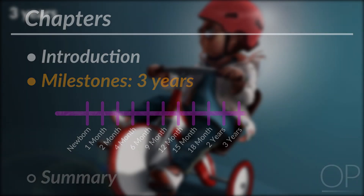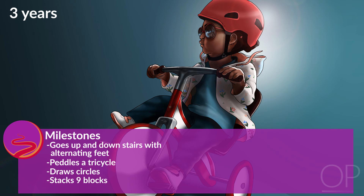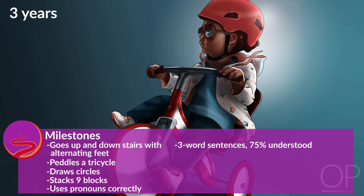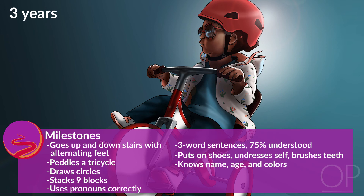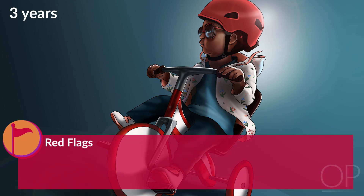Three years: At her next birthday, she has places to go — up or down stairs with alternating feet or via pedaling a tricycle. She is drawing circles, her cube tower has tripled to nine blocks high, and she can build a three-block bridge. She is using pronouns correctly, and a stranger can understand 75% of her language, which consists of three-word sentences. She can put on her shoes and undress herself, and brush her teeth with help. She knows her name and age and can name colors. She is interacting in group play and taking turns. Play becomes more imaginative as children seek to understand the world around them. She is most likely toilet-trained during the day.